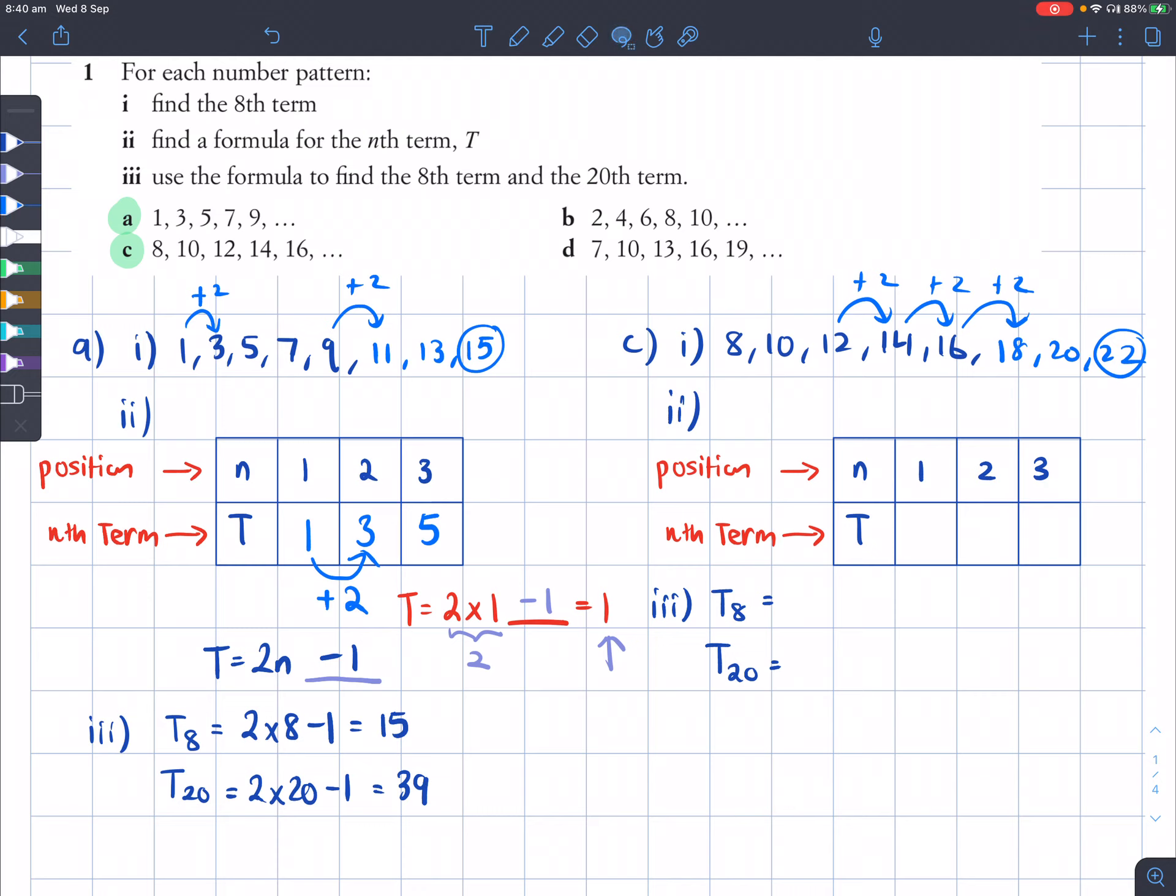Now let's have a look at how to find our formula for this set of values. Remember our first position represents number 8. And then our second position here is 10. And the third one is 12. So it's important to fill in this table of values first. And then we can see that this goes up by 2.